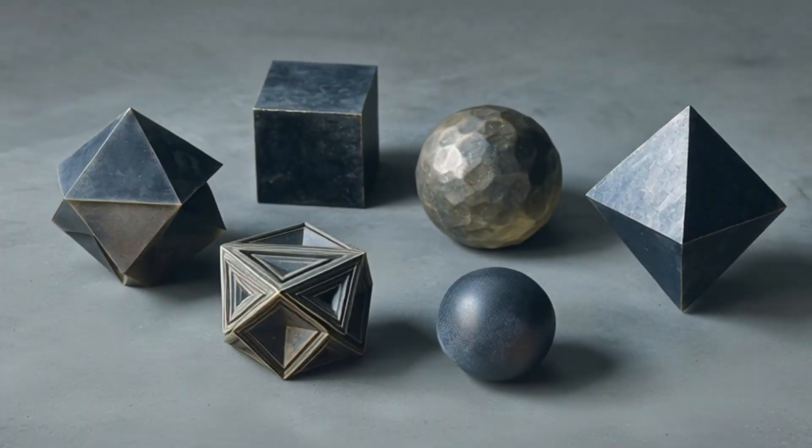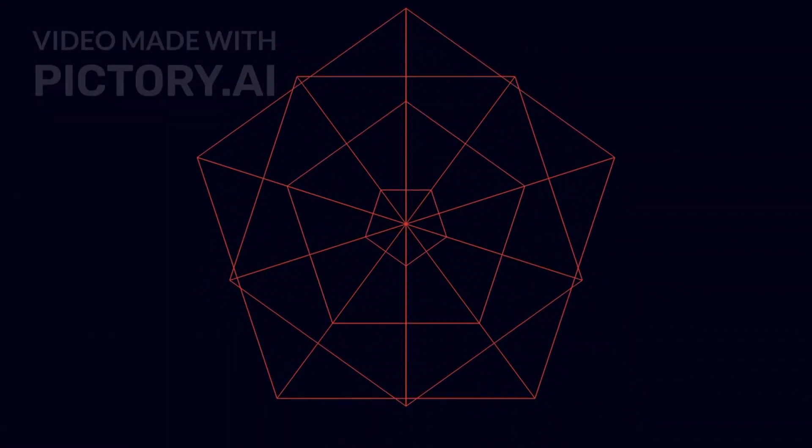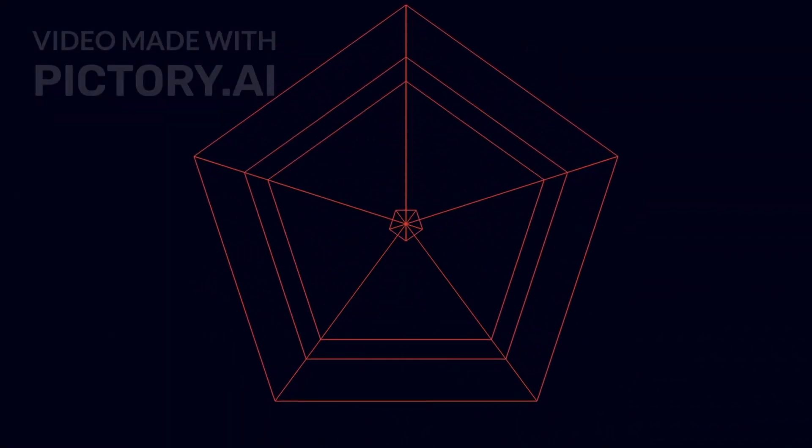The first four represented the world we can touch. The last one represented everything we cannot. The dodecahedron is a three-dimensional shape made of 12 perfect pentagons.